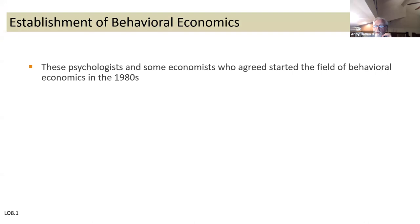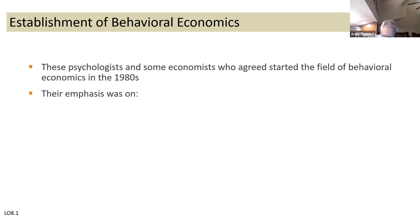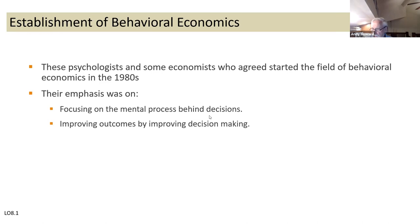Interestingly, these psychologists knew zero about economics — less than beginning students. Some economists, though, started finding out what these researchers were saying about human behavior and started applying it. The emphasis of this group back in the 80s was focusing on the mental process behind decisions — seeing what was really going on mentally when people made decisions, and then improving outcomes by improving decision-making.